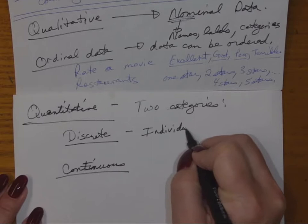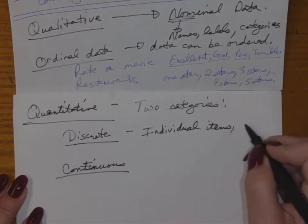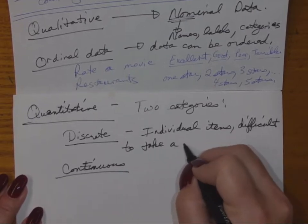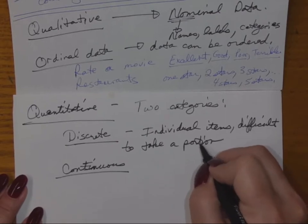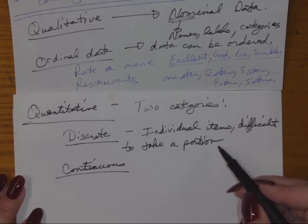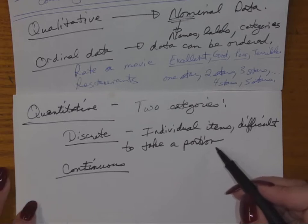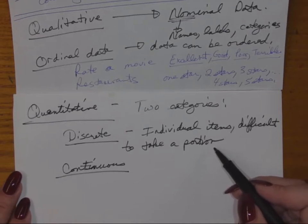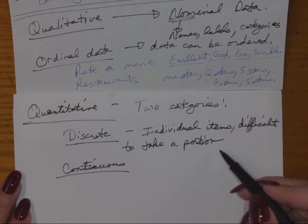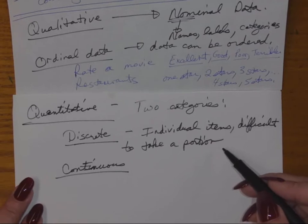Discrete data refers to individual items — something you can't easily take a portion of. For instance, the number of tomatoes in a field might be 22, or the number of cows might be 15. It's difficult to take a portion of those. We could cut a tomato in half, but we're probably not taking a half-tomato to market. So we wouldn't say 1.9 tomatoes — we think of them as individual, whole items.